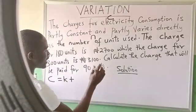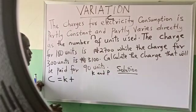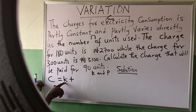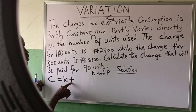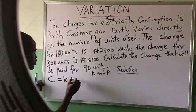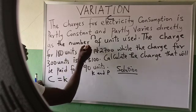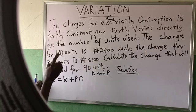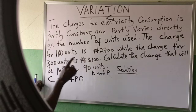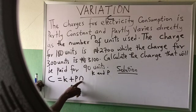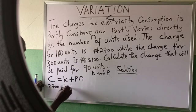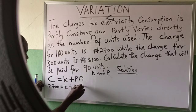So the equation becomes: C = K + P×N. They said the charge for 180 units is 2700, so: 2700 = K + P(180). This is the number of units and this is the charge. You notice there are two unknowns here, so we need a second equation. The charge for 300 units is 3100, so: 3100 = K + P(300).